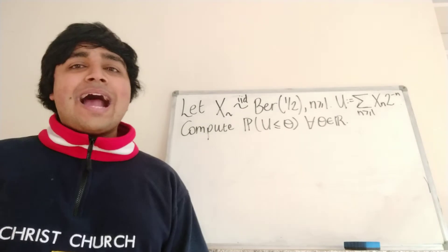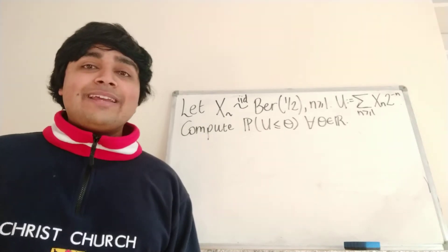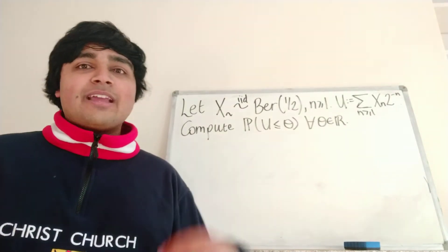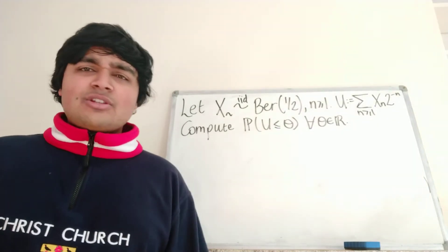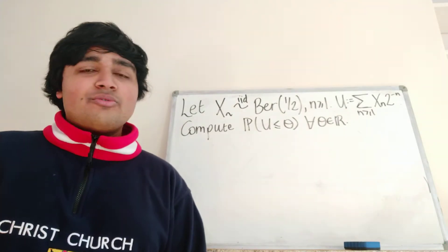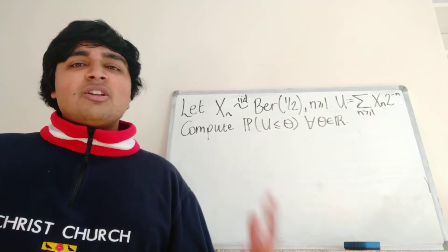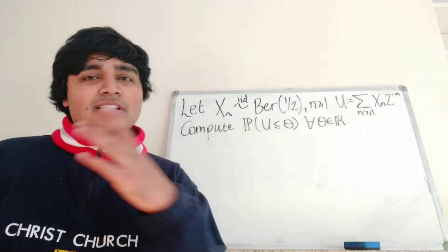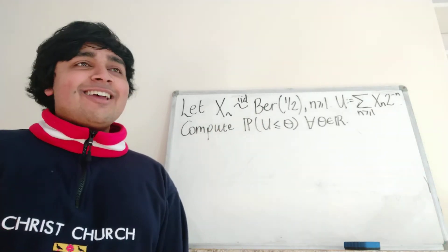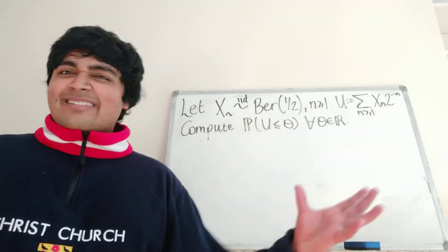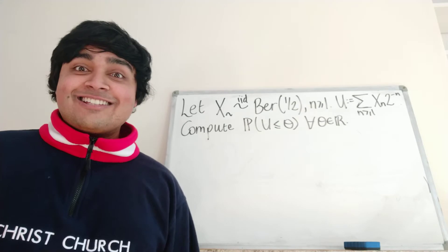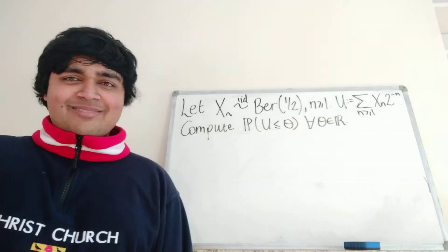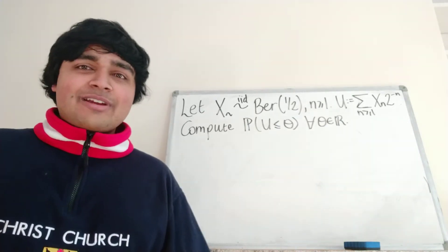Today what I want to do is show you how you can generate a uniform distribution just from flipping a bunch of fair coins. If you don't know what a uniform distribution is, don't worry too much — it's not really pivotal to this video. I'm just going to say a few lines about it at the end. Let's get stuck into what the theorem is, or rather what the thing I want to generate is.